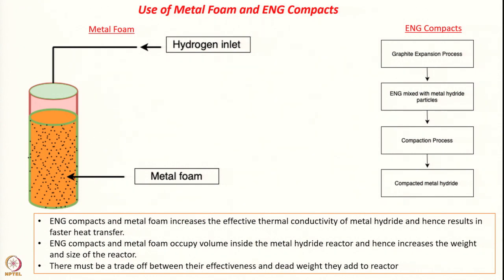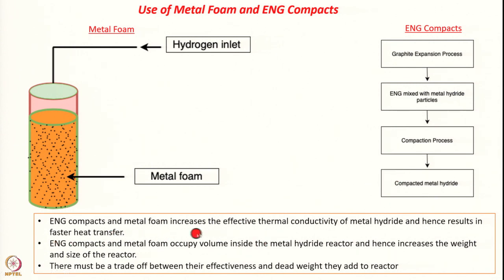To increase thermal conductivity, metal foams such as aluminum foam or copper foam are introduced into the metal hydride reactor, increasing the effective thermal conductivity. Similarly, ENG compacts are prepared by mixing expanded natural graphite with metal hydride particles, then compacting them to produce a higher thermal conductivity material. The main drawback of metal foams and ENG compacts is that they occupy volume inside the reactor and increase its weight and size, requiring a trade-off between effectiveness and added dead weight.